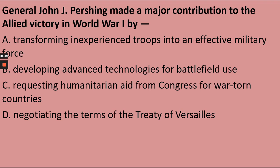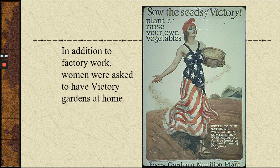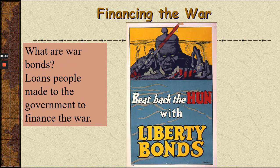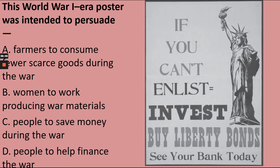General John J. Pershing made a major contribution to the Allied victory in World War I. Here are some propaganda posters — Liberty Gardens: women were asked to grow gardens to help with vegetables because all the farm boys went to fight in the war. Remember, Liberty Bonds were used to finance the war — same as war bonds. Loan your money to pay for the war. This World War I era poster was intended to persuade people to buy Liberty Bonds to help finance the war.